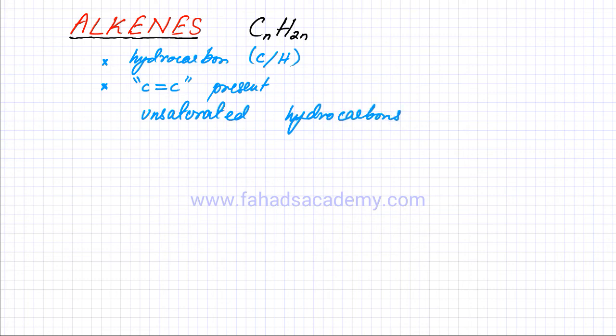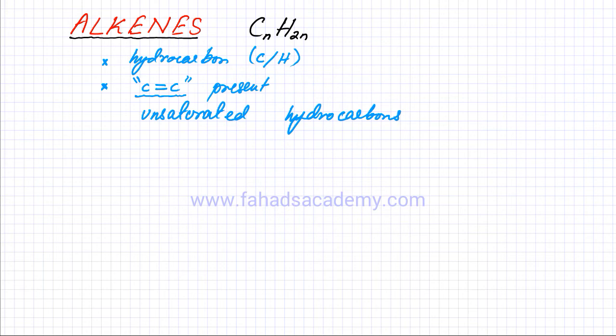The term unsaturated hydrocarbon applies to all organic molecules that contain the C double bond C functional group. There's always going to be two carbon atoms in an alkene which are going to have double bonds between them. Remember this term — unsaturated always applies to alkenes, anything which has carbon double bond C.